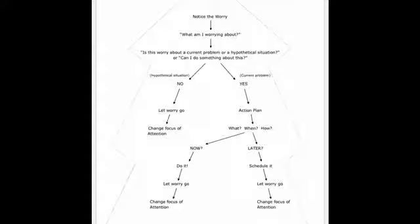On the right hand side of the worry tree, this shows us what to do when the worry is a current problem, and when you can do something about this worry. This illustrates when you have a real problem, this can lead to practical action.